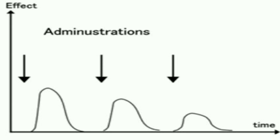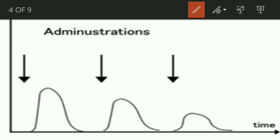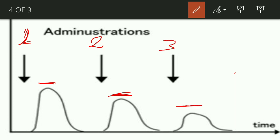Here is a simple graph to show tachyphylaxis. On the Y-axis it is effect, on the X-axis it is time. When the drug is administered for the first time the response shown by the drug is high, and when it is administered for the second time the response decreased slightly, and for the third time it decreased still more, and it goes on.